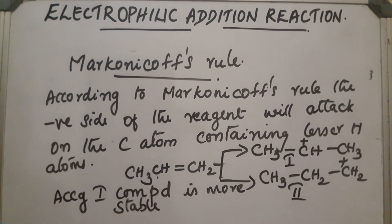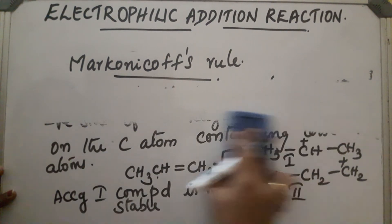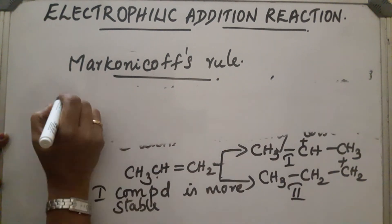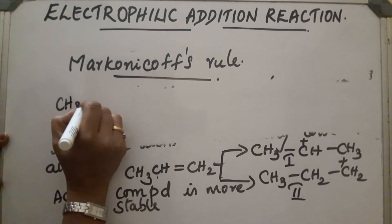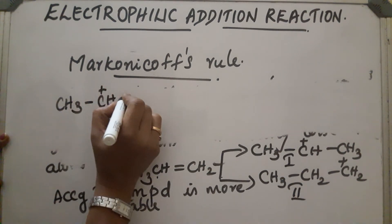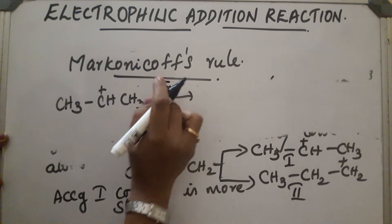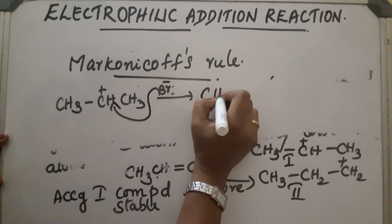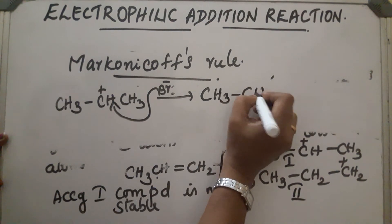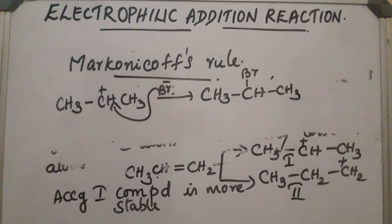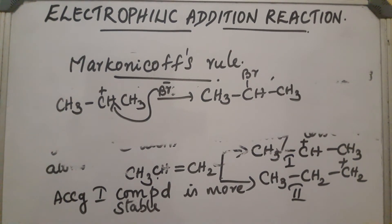So what will happen? The stable carbocation is CH3-CH+-CH3. Br minus will come and attack here, so the product obtained will be CH3-CHBr-CH3. This is Markovnikov's rule: in the case of unsymmetrical alkenes, it will follow Markovnikov's rule.